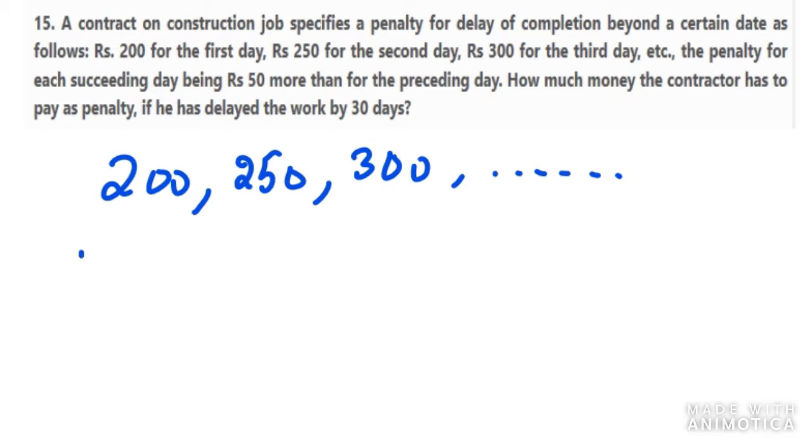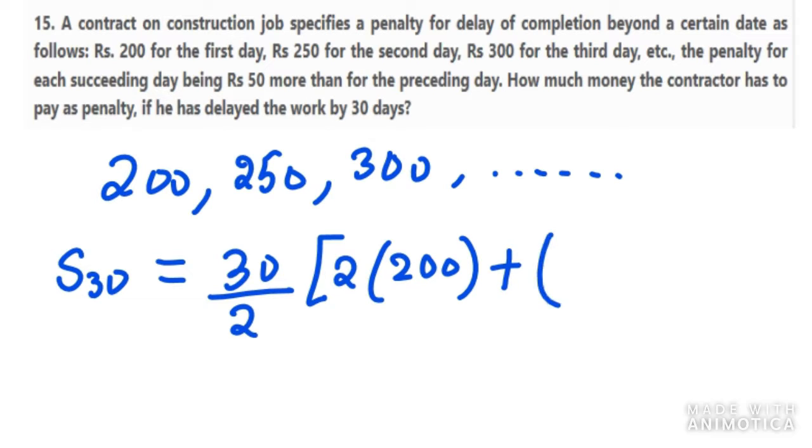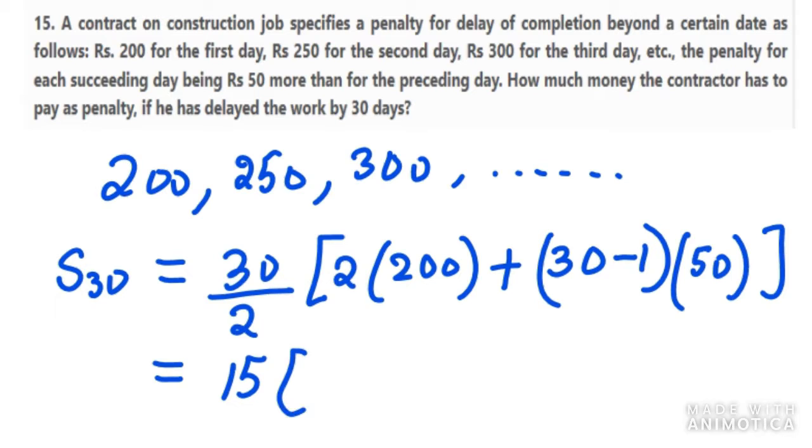S30 = (30/2)[2(a) + (n-1)(d)]. Twice of a, in this case is 200, plus n minus 1, 30 minus 1, times d. D in this case is 50. So 30 over 2 is 15, twice of 200 is 400, plus 29 into 50.